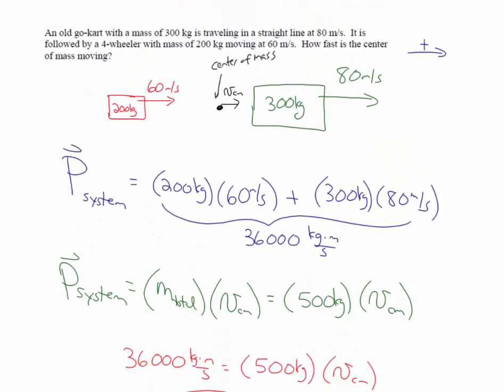There are no external forces acting, so the velocity of the center of mass of the system stays constant. More specifically, this relates center of mass motion to the momentum of the system. The momentum of individual objects is mass times velocity, and the total momentum of the system equals the total mass times the velocity of the center of mass. Sometimes it's easier to look at momentum individually, sometimes as a system, but there is this key relationship between individual momentum vectors and the velocity of the center of mass.